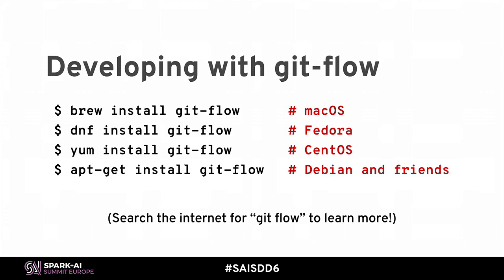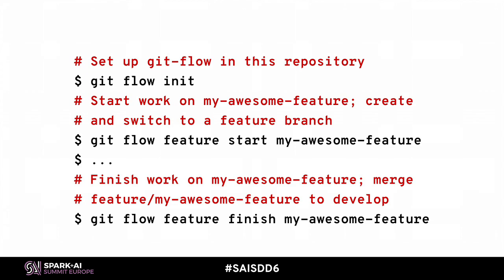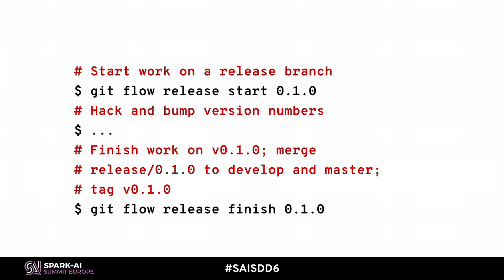Git flow is really easy to install. This table shows installation commands on some of the most common package managers, and if you don't see yours here, just Google for Git flow and you'll find directions. You can use git flow init to do a one-time setup on a repository. The basic Git flow feature workflow is to issue git flow feature start on a new branch name, do your editing as usual, and then close it out with git flow feature finish.